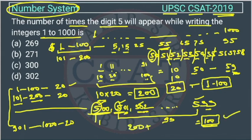So total will be 200 plus 100 is equal to 300. So total there will be 300 times the digit 5 will appear. So the answer is option C.